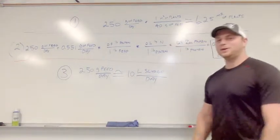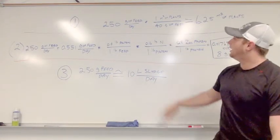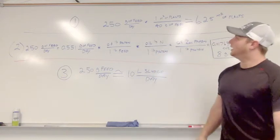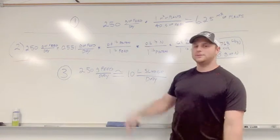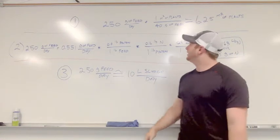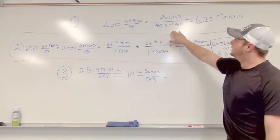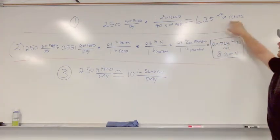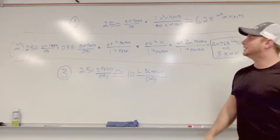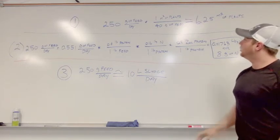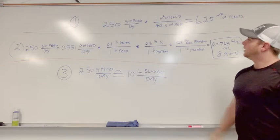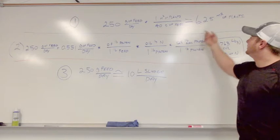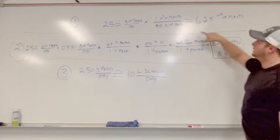Today we're doing a nitrogen balance for our decoupled aquaponics system. In equation one, we'll figure out how many plants we can feed. We put in 250 grams of feed per day, and using the conversion factor of 40 grams of feed to feed one square meter of plants, we can feed approximately 6.25 square meters of plants. This might be a range—our feed is higher in protein than normal feed and might feed more plants, but this is the conversion factor we were given.